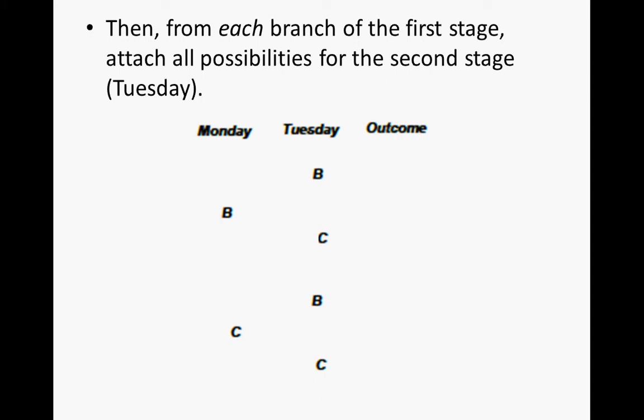Now we attach the possibilities. If we played a board game on Monday, we could play a board game on Tuesday — meaning we'd play board games for both nights. We could play a board game Monday but then choose a card game on Tuesday, giving us the outcome board game, card game. If we chose a card game on Monday, we could play a board game on Tuesday — card game, board game — or also a card game on Tuesday — card game, card game. Note that if the situation had more than two stages, this process would be repeated until all stages have been represented.